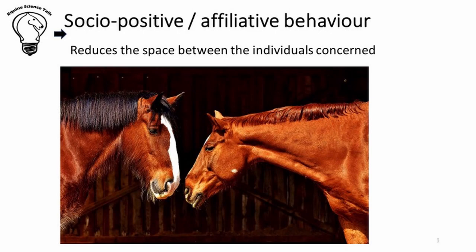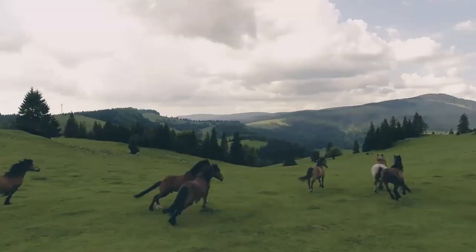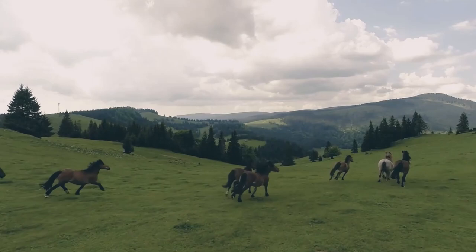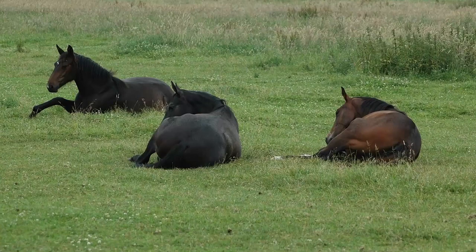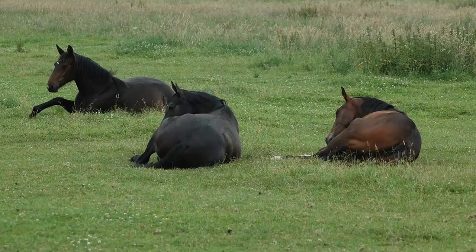Within bonded groups we see a great deal of socio-positive or affiliative behaviors that reduce the distance between individuals, promote their bonds, and reduce the level of aggression. These behaviors include friendly approaches — we can see an example in the picture where the horse with the blaze approaches the darker horse with its ears gently pricked — or a friendly greeting, which may develop into play behavior, running together, grazing, just hanging out together, or sleeping and resting, or mutual grooming.